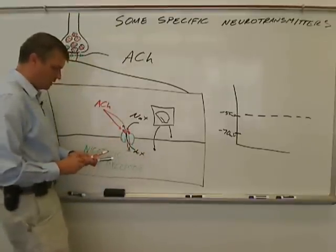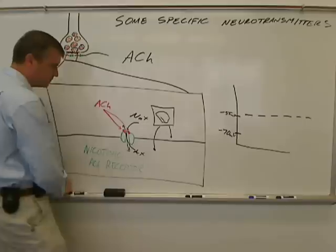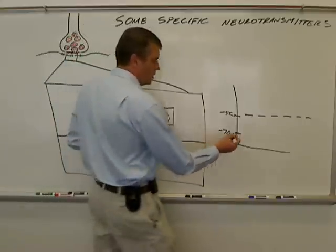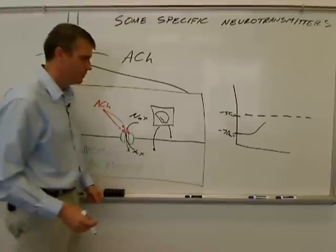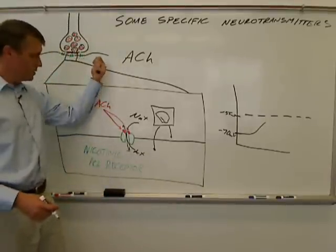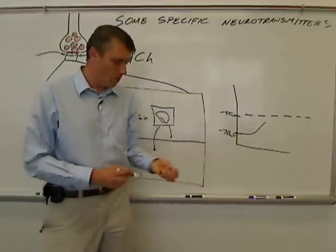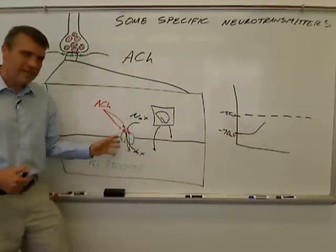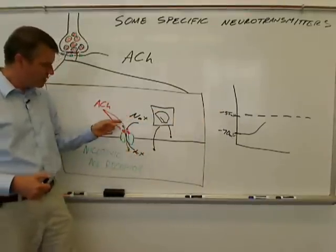If this acetylcholine receptor continues to be stimulated by acetylcholine, then the voltage is going to increase. So if we're on another neuron here, or a muscle cell, the voltage is going to approach threshold. Now somebody out there is going, wait a minute, in order to go positive, we have to let sodium in, but we're letting potassium out as well.